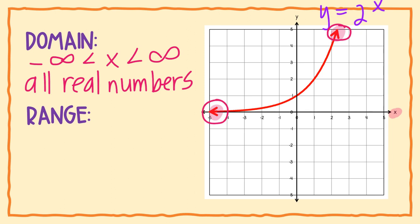You know that better as all real numbers. For range, we want to look at the y axis — the one that goes up and down. The arrow at the top means it keeps going forever upward, so it goes to positive infinity.